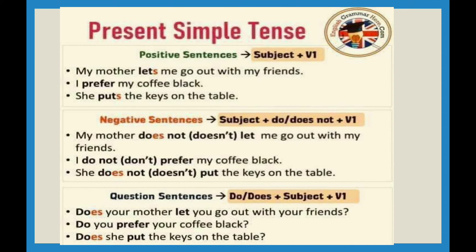Now students, we will learn about simple present tense. In affirmative or positive sentences, the formula is: subject plus V1 plus object. V1 means the root form or first form of the verb. For example: My mother lets me go out with my friends. I prefer my coffee black. She puts the keys on the table. Here we use a singular verb because 'my mother' is singular.